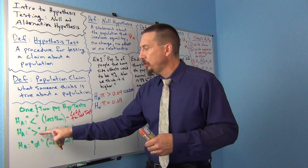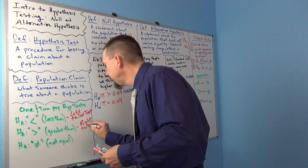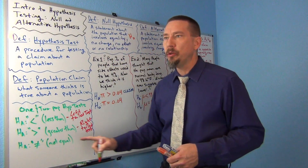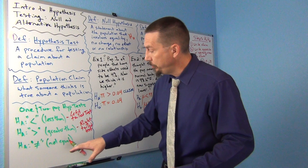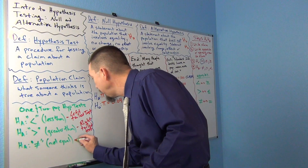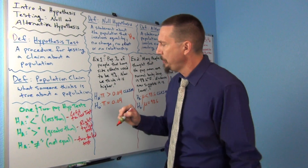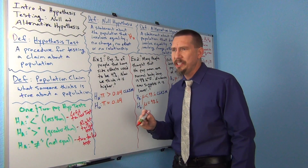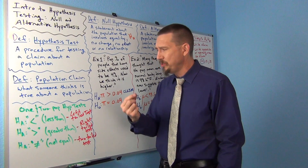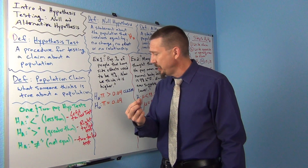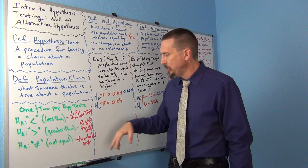If your HA is greater than, greater than looks like an arrow pointing to the right, so this would be a right-tailed test. If HA is not equal, there are two ways that could happen — it could be greater or less — so not equal involves both tails; we call this a two-tailed test. This applies for one and two population hypothesis tests. For multiple populations, like ANOVA or goodness of fit, tests condense into one right-tailed test.